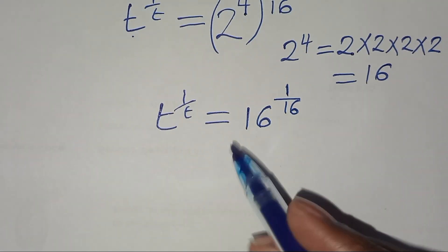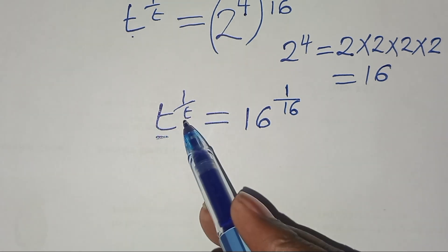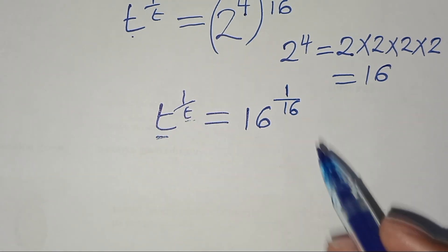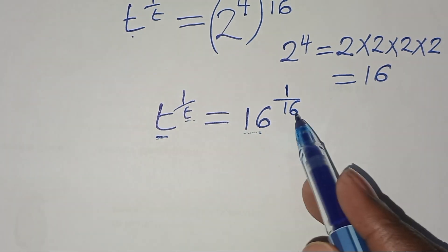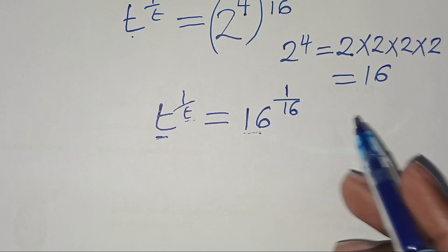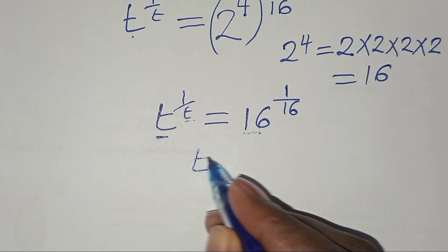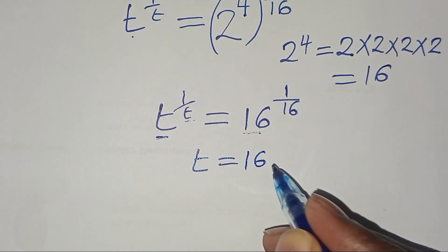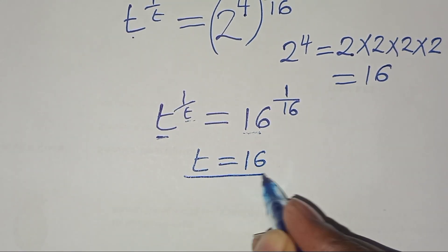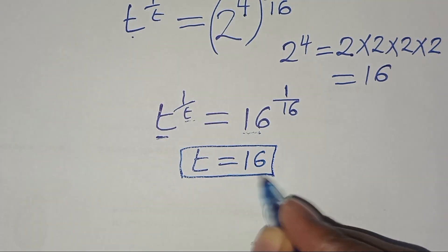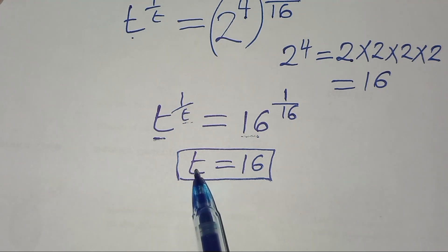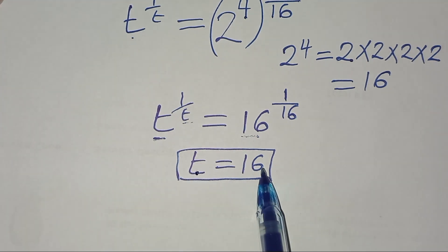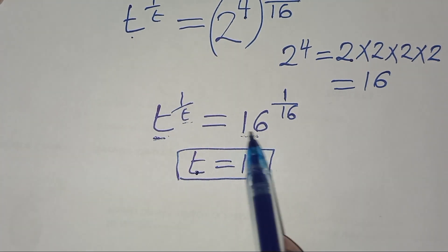Clearly, you can see that the base t is equal to the exponent. We have 16 at the base and 16 in the exponent. So this implies that t is equal to 16.